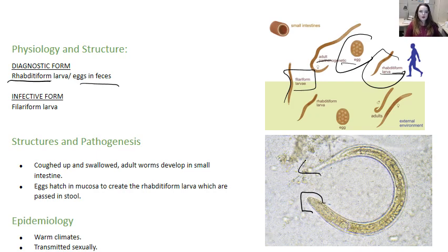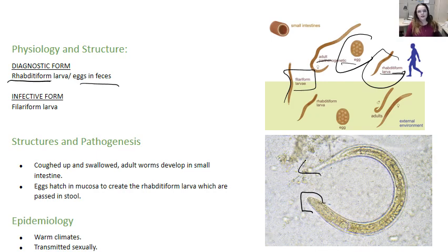So how does it cause disease? S. stercoralis enters the circulation following a pulmonary course. What does that mean? It means even if you ingested the egg, the egg is going to reproduce in the gastrointestinal tract, produce a larva that can break through the intestinal wall, get into the bloodstream, and get into the lung. Once it's in the lung, it gets coughed up and then swallowed again, and then the adult worm develops in the small intestine. This is very similar to what I described for Ascaris.